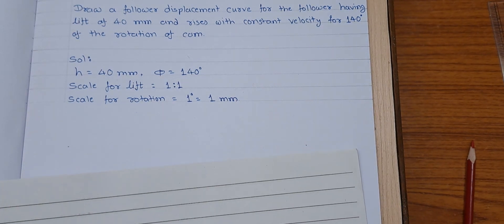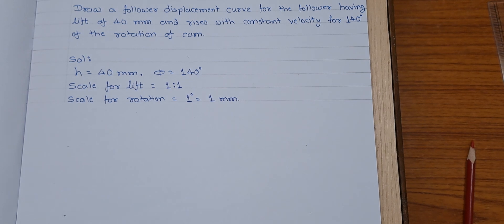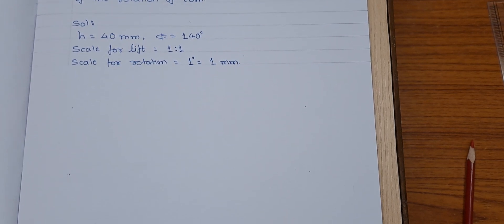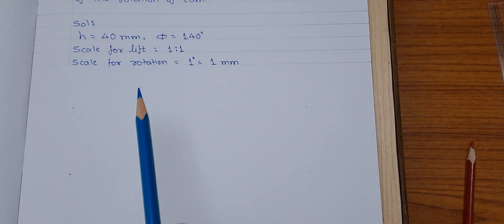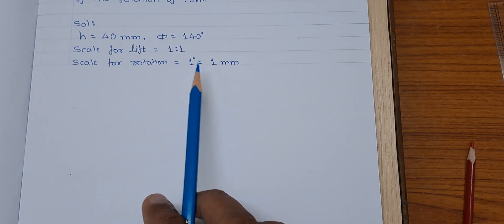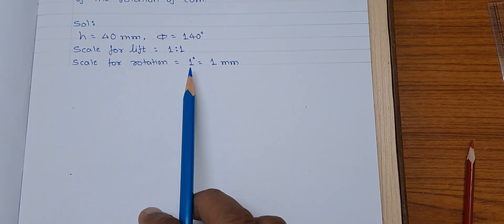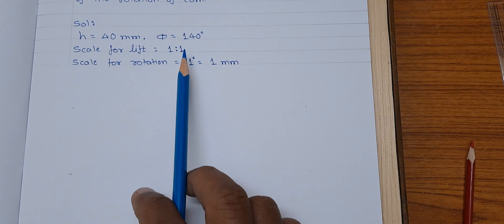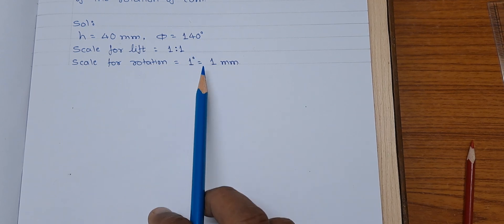Now, to draw the displacement curve we have to prepare a rectangle with length 140 mm, as scale we have taken 1 degree of rotation equal to 1 mm.